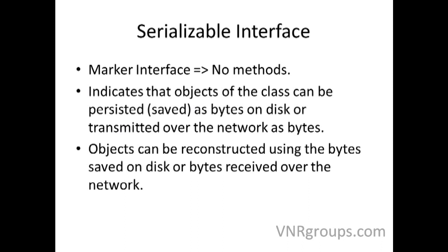So what is the purpose of this marker interface? The marker interface lets Java know that this class — an object of this class — can be persisted. Persisted means saved. It can be saved as bytes on disk, or those bytes can be transmitted over the network to another JVM. And when it is transmitted over the network to another JVM, that JVM can read those bytes and reconstruct that object.